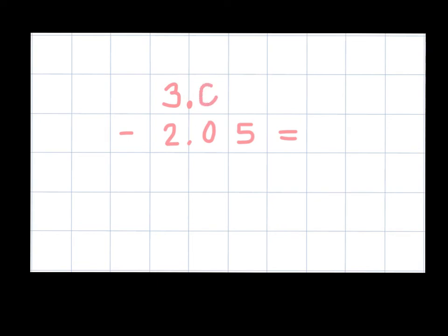So once I place the decimal, I can add zeros as placeholders, and it will not change the value of my 3 at all. Once those are placed in, I can then subtract. But as you can see, I'm going to have to borrow.